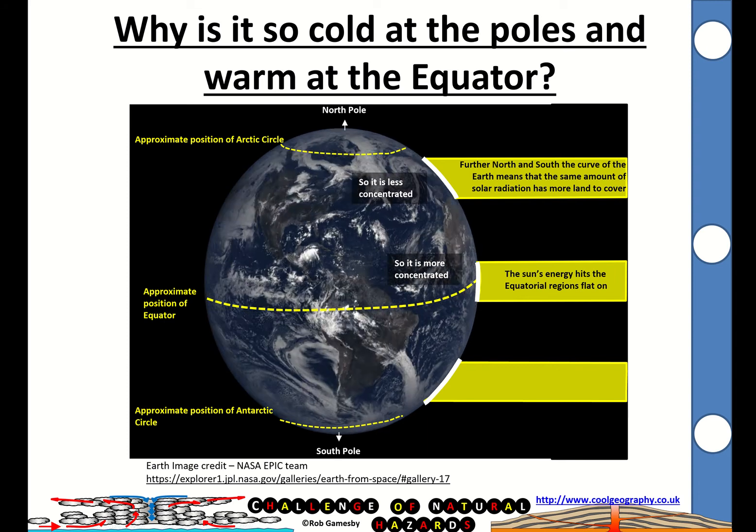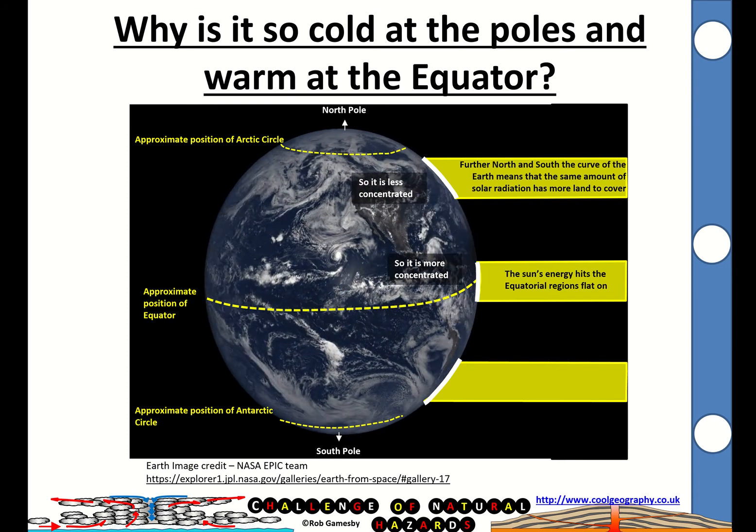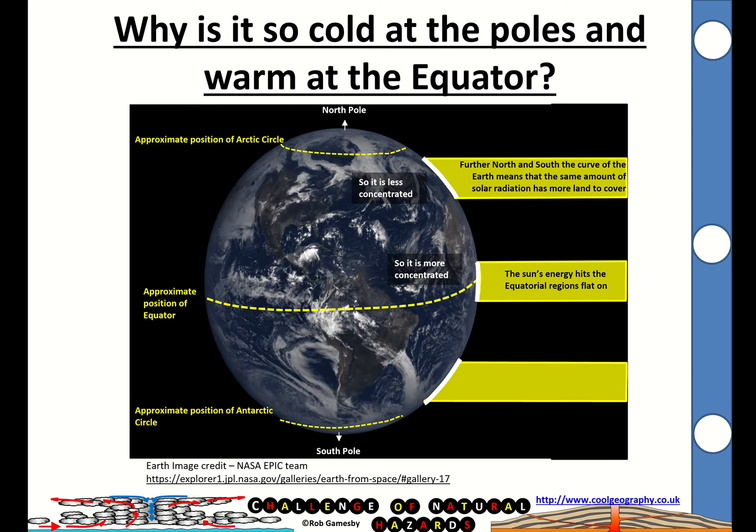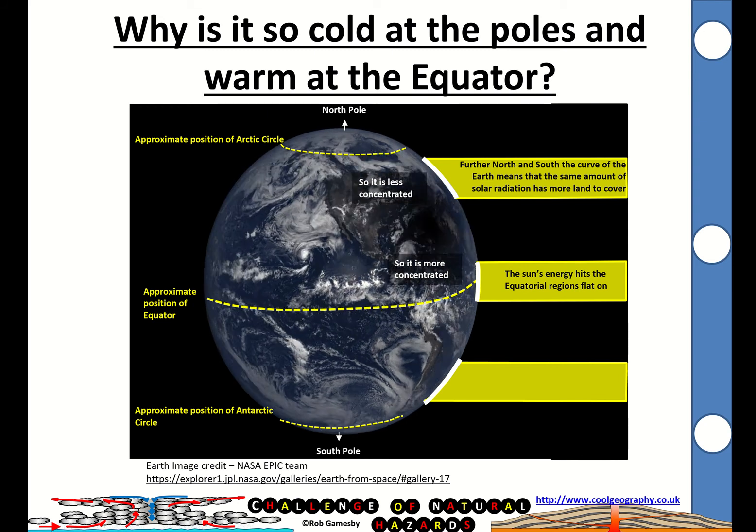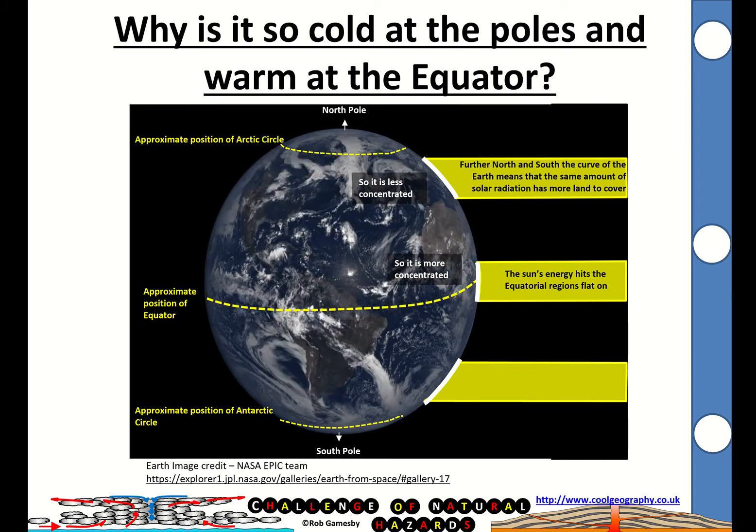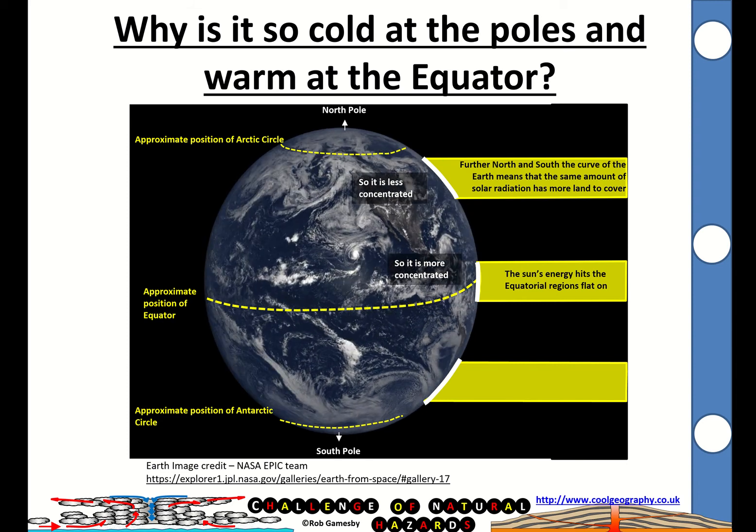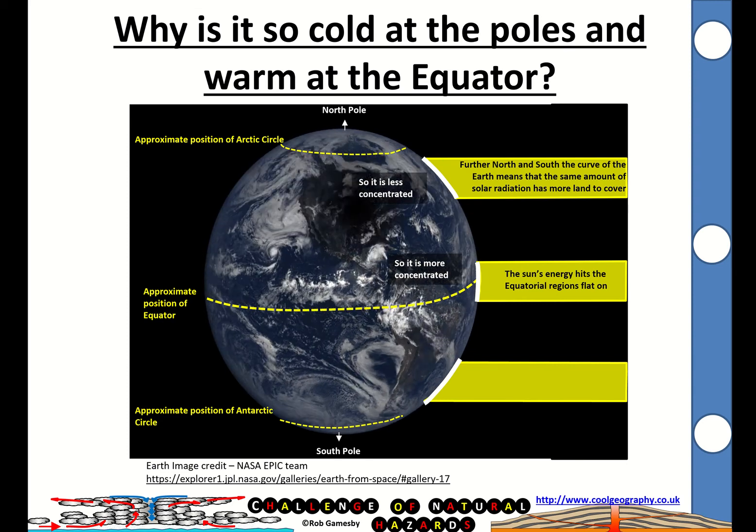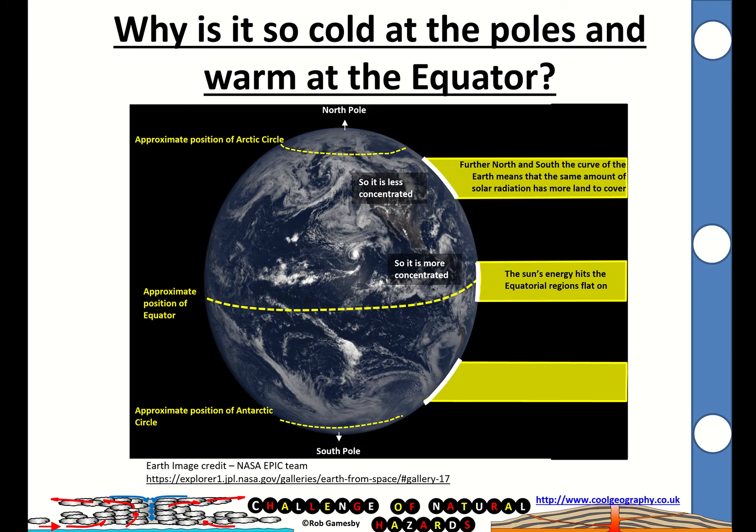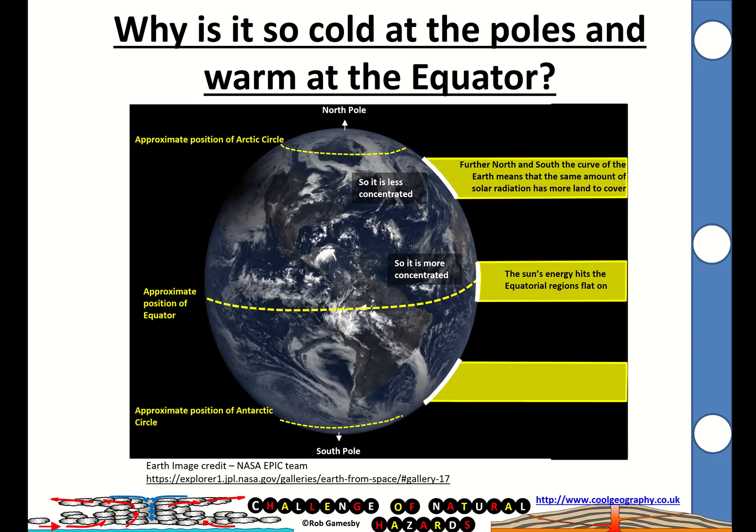So for us here in the United Kingdom, the sun's energy is very spread out. In fact, technically without the movement of the atmosphere and the oceans distributing heat to our regions in the United Kingdom, we'd lose more heat than we actually gain from the sun across a year, which would not be a good position to be in.